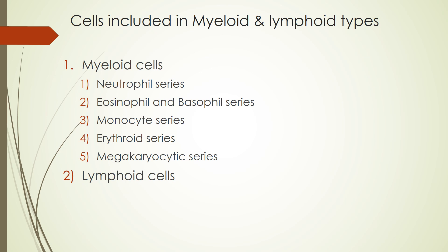The other cell line is the lymphoid cell, produced by the lymphoid progenitor stem cell. These are basically of two types: B lymphocytes, which further develop and produce antibodies, and T lymphocytes. So basically, we have two types of progenitor stem cells — one for myeloid cells and one for lymphoid cells.